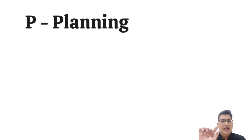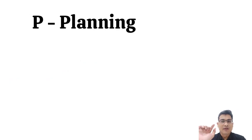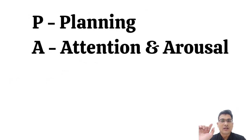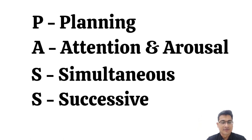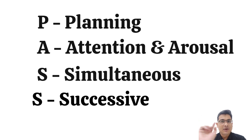The PASS is an acronym: P-A-S-S. The full form is P for Planning, A for Attention and Arousal, S for Simultaneous, and S for Successive. But it doesn't go in this order.